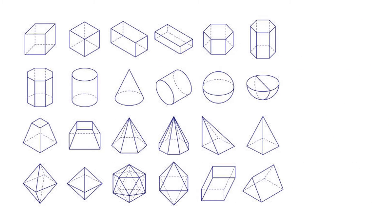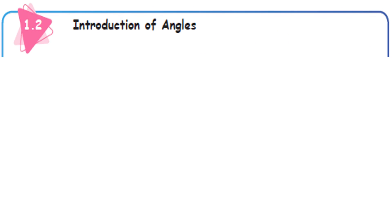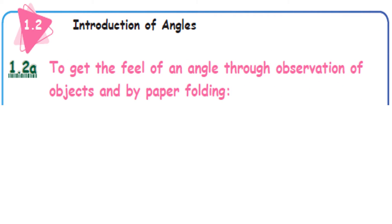These are all some of the three-dimensional shapes — you can draw them and send them to us for your evaluation and you will be getting marks. Next: introduction of angles, section 1.2. Introduction of angles, 1.2a — to get the feel of an angle through observation of objects and by paper folding.